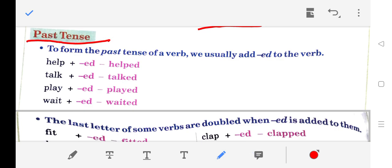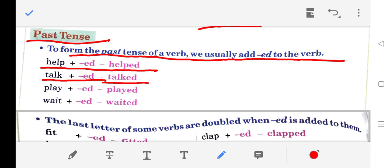Past Tense: To form the past tense of a verb, we usually add 'ed' to the verb. Help + ed = helped. Talk + ed = talked. Play + ed = played. Wait + ed = waited.